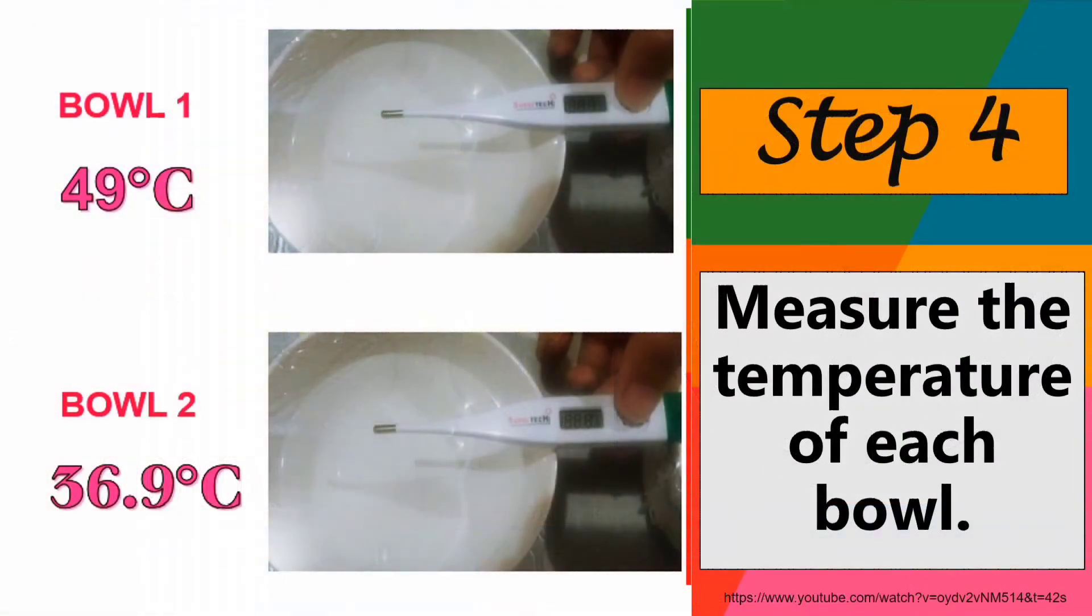Step 4: Measure the temperature of each bowl. For bowl 1: 49 degrees Celsius. Bowl 2: 36.9 degrees Celsius.